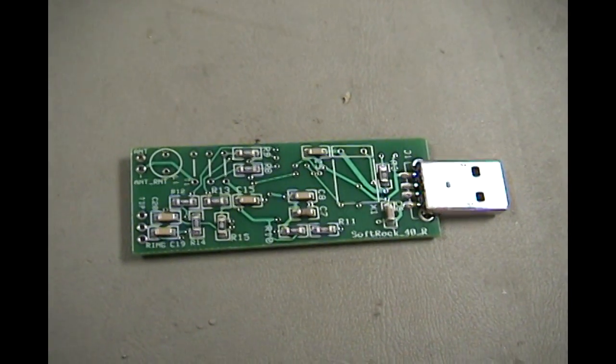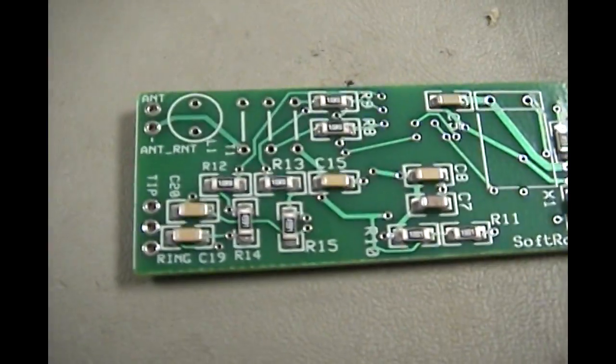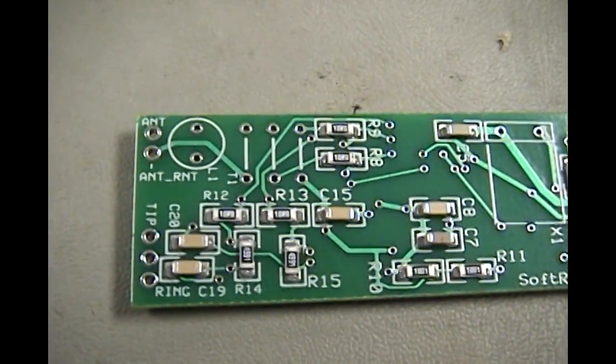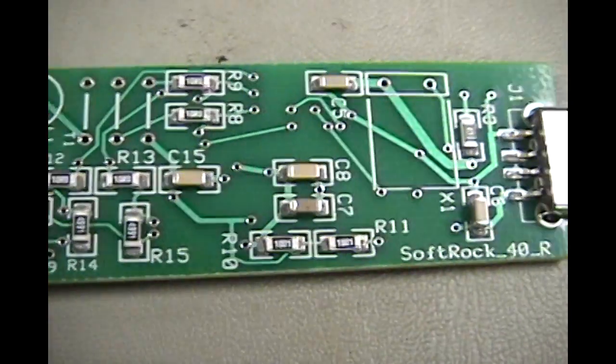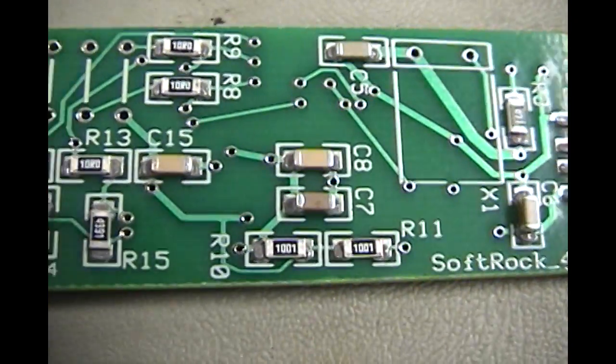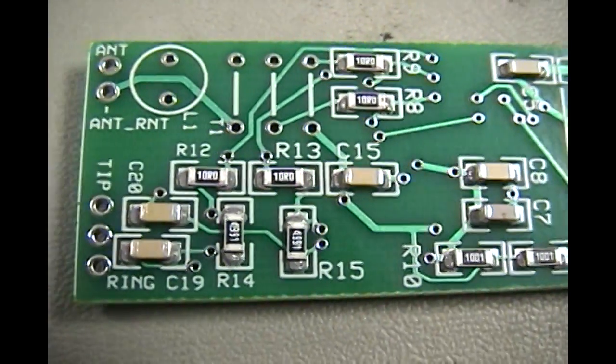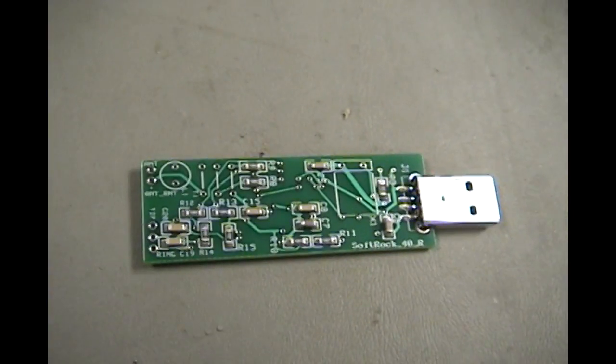Alright. Now that all of the rest of the surface mount parts are on there we are ready to bake it a second time. Now as you recall the other side is already stuffed which means that while the pieces are rather solidly on there right now once we put it into the oven they will in fact reflow at the same point that this side becomes liquid.